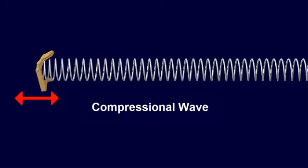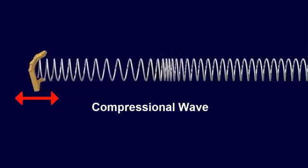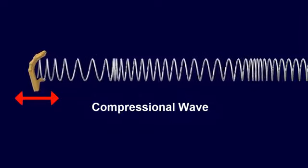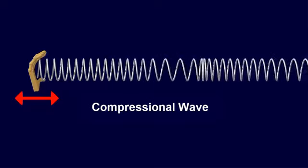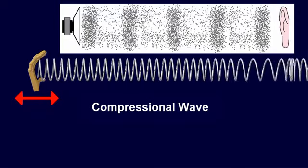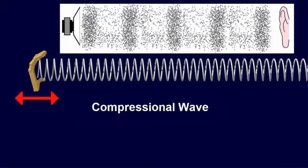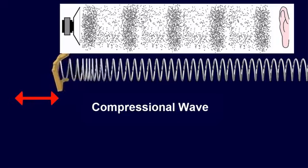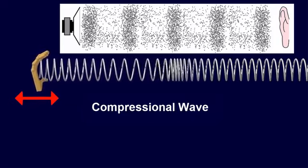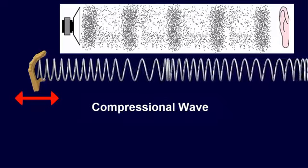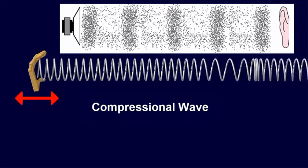They are compressional waves that travel on average 7 kilometers per second. These energy waves are transmitted as the material through which they are traveling alternately compresses and expands. Sound waves are also compressional waves. Because all substances, solids, liquids, and gases are capable of compression and expansion, compressional waves can travel through all materials. We can hear sound traveling through the air, water, or solid rock.